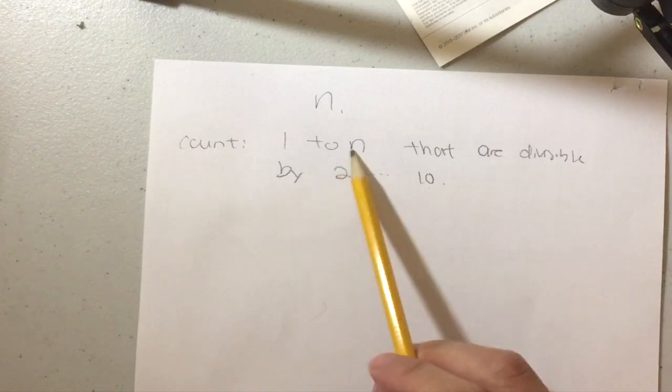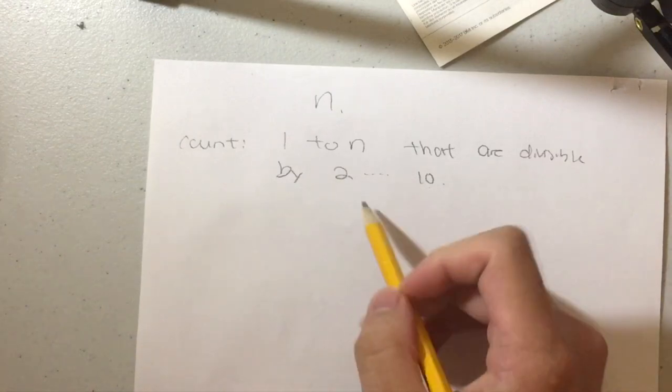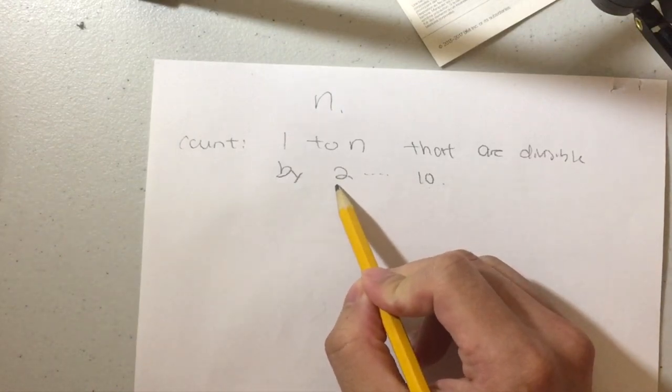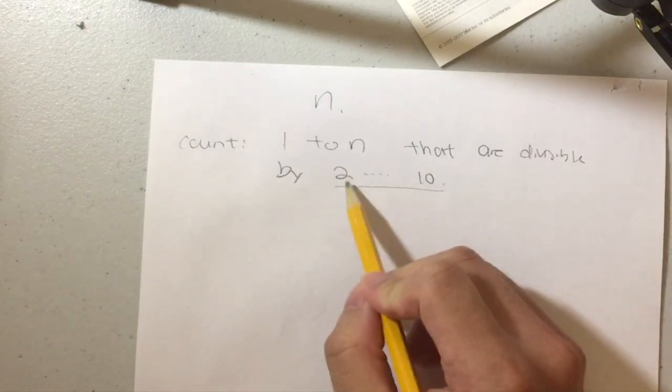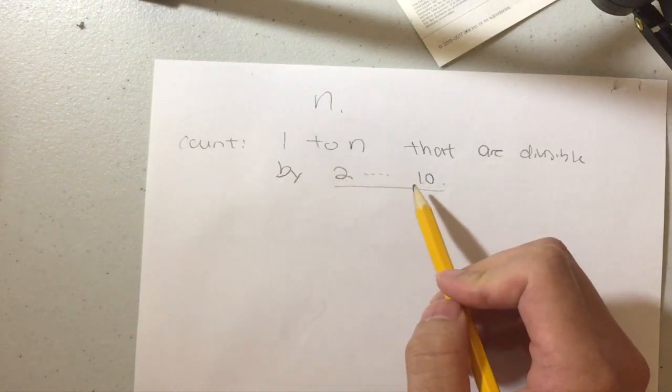So then once we have that, we could easily just find the number of numbers that are divisible by one to n. Because if we could find one single number that is divisible by all, then we don't have to mod every single number like 2, 3, 4, 5, 6, 7, 8, 9, 10.